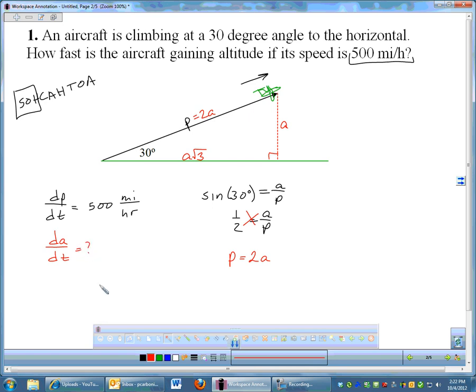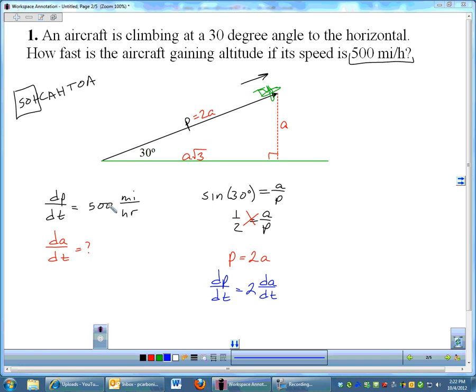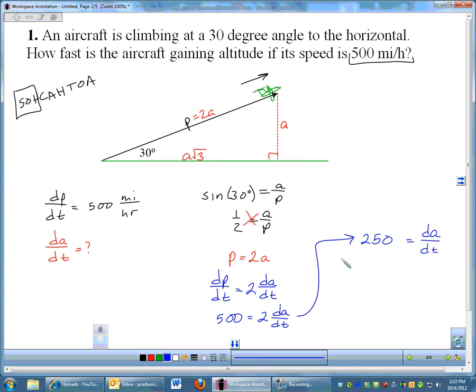We could take the derivative of that. We're trying to find dA/dt - that's our goal. Since I have an equation I can now do the derivative. The derivative of P is dP/dt. The derivative of 2A is 2 dA/dt. Now we can just plug in. dP/dt is 500 equals 2 dA/dt. Then we divide by 2 and we'll get 250 equals dA/dt. Always, always, always remember to put in your units. We have to think altitude would be measured in miles per time, so this is going to be miles per hour. So there's our answer - dA/dt is 250 miles per hour.